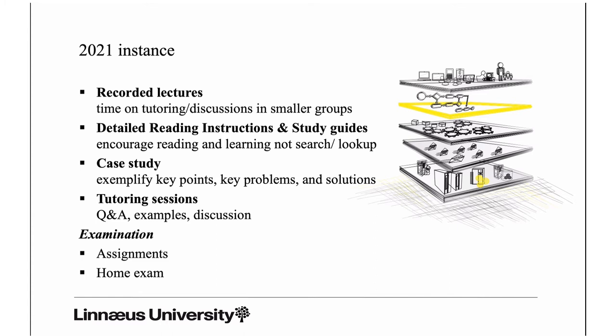In the 2021 instance, we continue to flip the classroom. We use recorded lessons rather than live lectures and spend more time on tutoring and discussions in smaller groups, which we believe is much more efficient. Instead of 90-minute lectures, we have shorter recorded lessons and invest the time in smaller groups where you have lots of opportunities to ask questions and discuss. We also provide detailed reading instructions to help you process the literature.